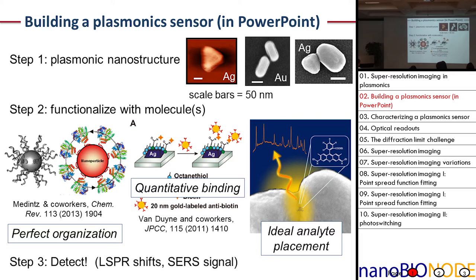You can introduce some type of binding moiety on the surface. For example, you can functionalize your nanoparticle with biotin and then use that to capture a secondary probe - in this case an antibiotin antibody attached to a gold nanostructure. Or you can adsorb your molecule of interest, which is often what we do in SERS, particularly when we're doing single-molecule SERS. Here I've shown schematically a molecule sitting conveniently in a hot spot created at the junction between two nanostructures. Once you've assembled your sensor, you then just detect some signal of interest, typically a shift in the plasmon resonance or SERS from your analyte.